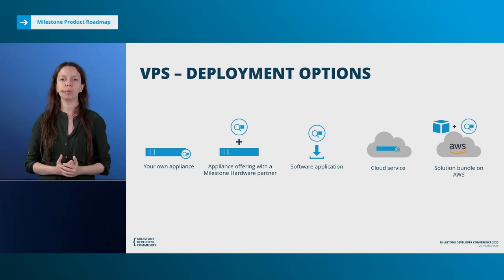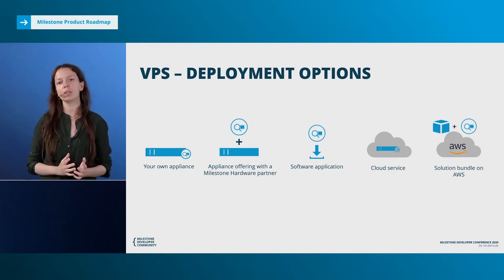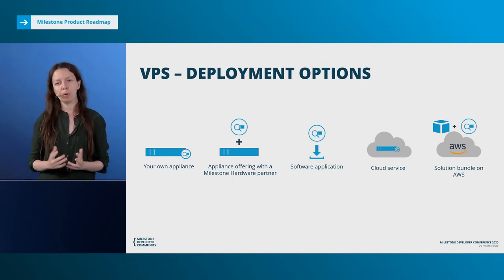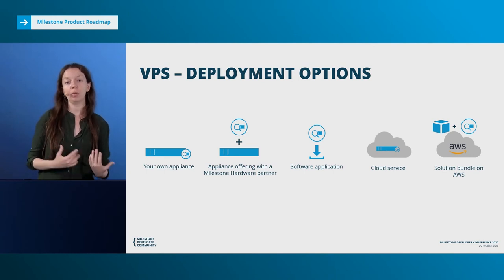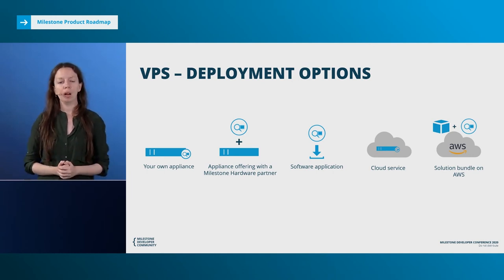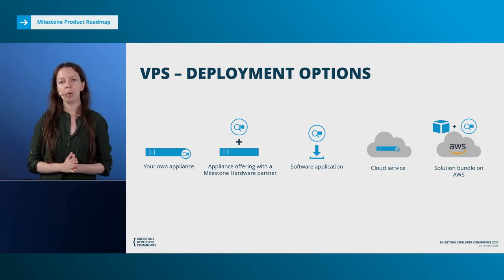The deployment options for VPS show great flexibility. Starting from the left, you can use your own appliance embedding an entire hardware stack with GPU platforms, Linux OS, and other tools. Alternatively, you can choose an appliance offering with a Milestone hardware partner to create a bundle. You can also choose normal software application or cloud service such as your own environment or private cloud hosted platforms connected to the VMS. We have also packaged XProtect as a product on AWS Marketplace, and you have the possibility to create add-on products and publish them in AWS Marketplace for easy deployments into the customer's virtual private cloud account.